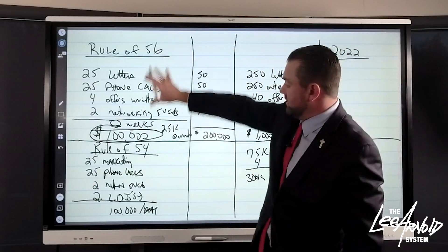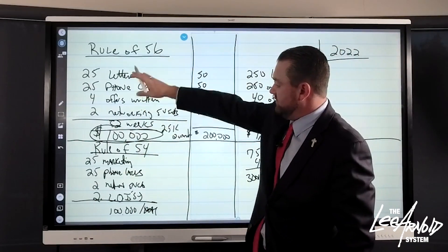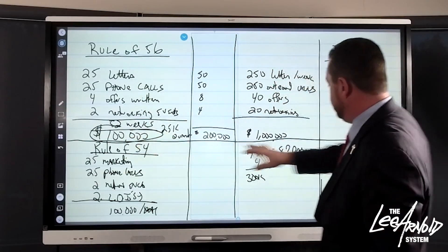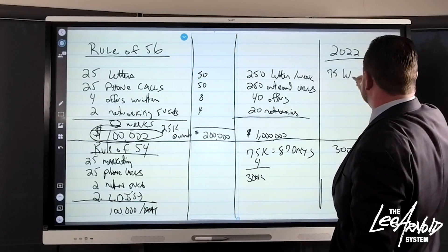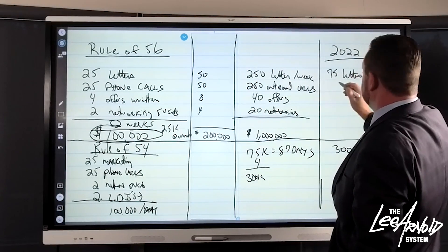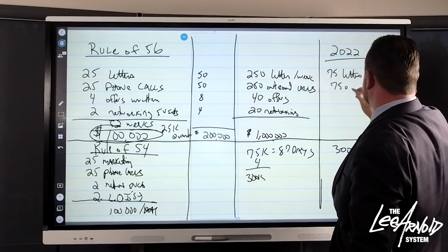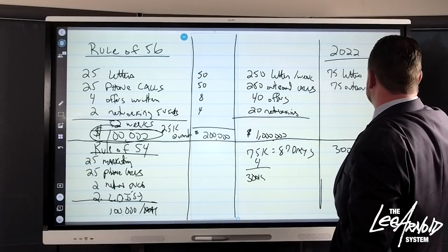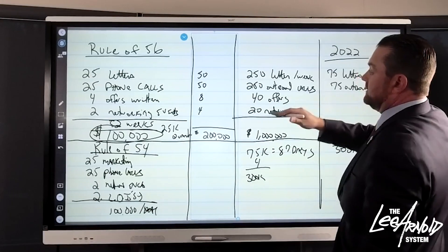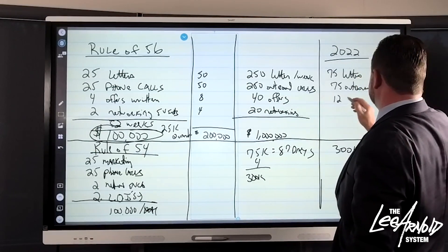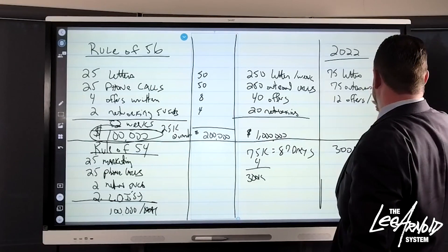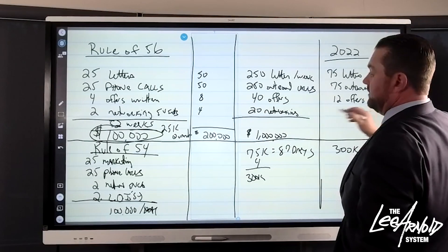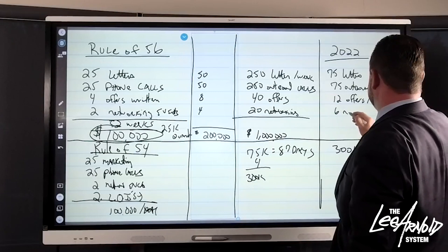So now we come over here and we look at the rule of 56, and if these functions produce $100,000, we need $300,000, then you're going to need to do 75 letters, you're going to need to do 75 outbound calls, you're going to need to do 12 offers per week, and you need to go to do 75, and six networking events.